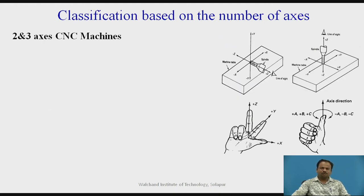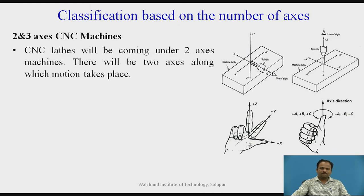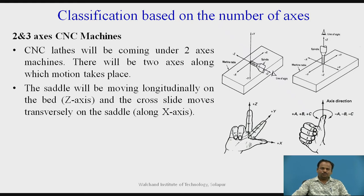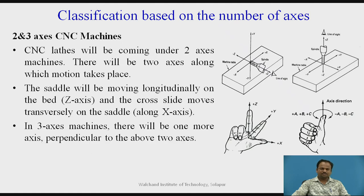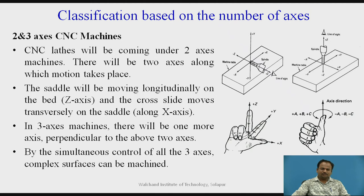Next is classification based on the number of axes — two and three axis CNC machines. CNC lathes come under two axis machines. There will be two axes along which motion takes place, either x or y. The saddle moves longitudinally on the bed along the z axis, and the cross slide moves transversely on the saddle along the x axis. In three axis machines, there will be one more axis perpendicular to the above two axes. By simultaneous control of all three axes, complex surfaces can be machined. Here in this figure, the right hand thumb rule is shown.